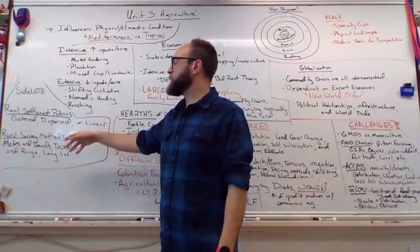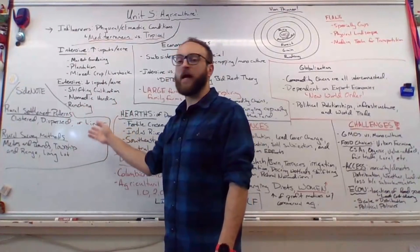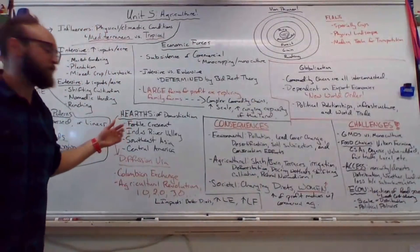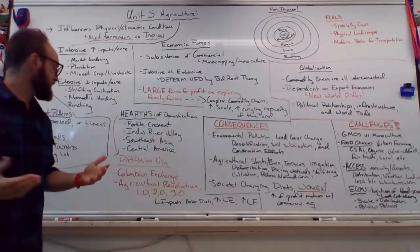We would discuss also the difference between rural settlement patterns and rural survey methods. A settlement pattern refers to this idea of it being clustered. That would be a lot of houses or farms nearby each other. Dispersed would be separated and linear would be in a straight line.